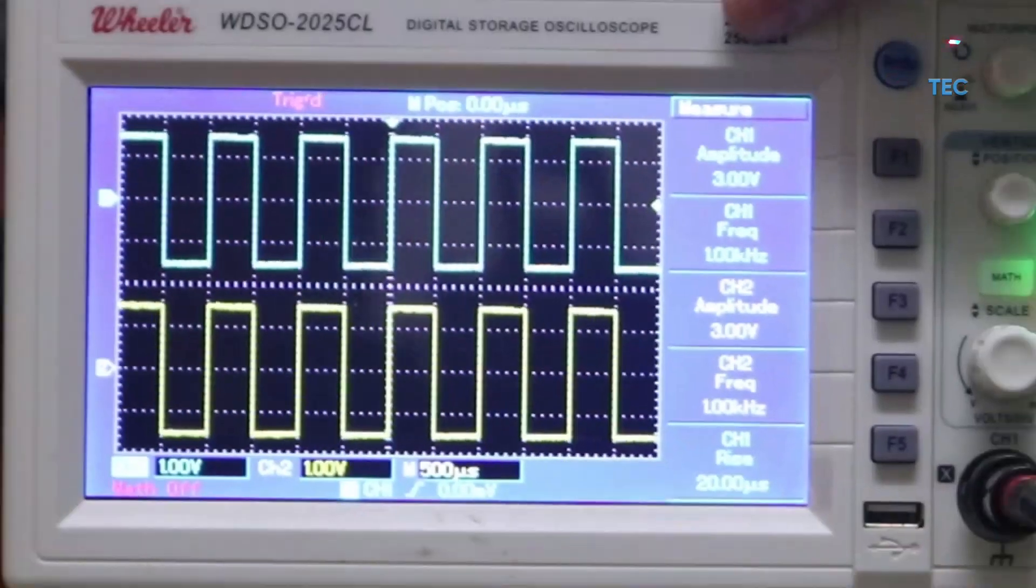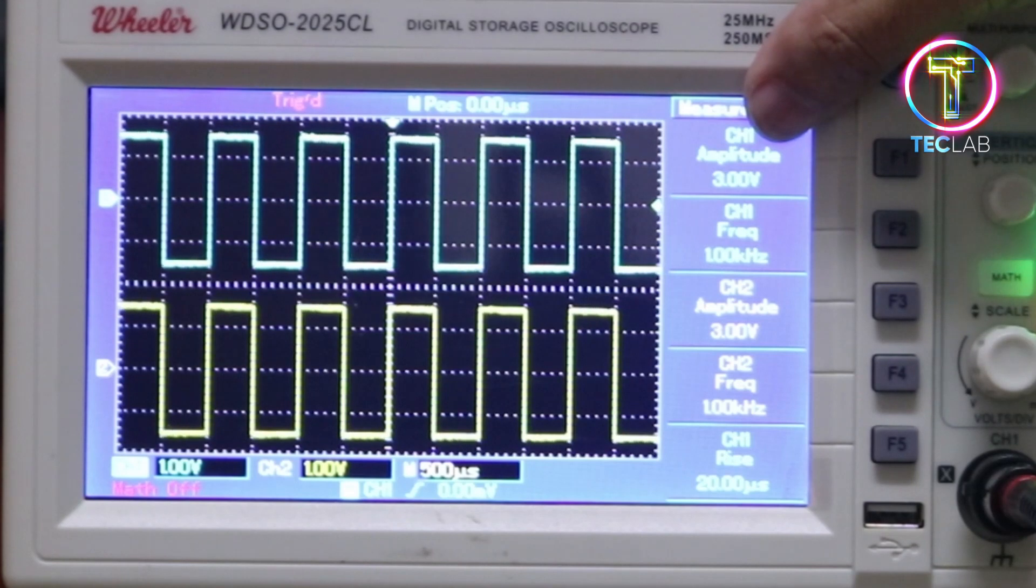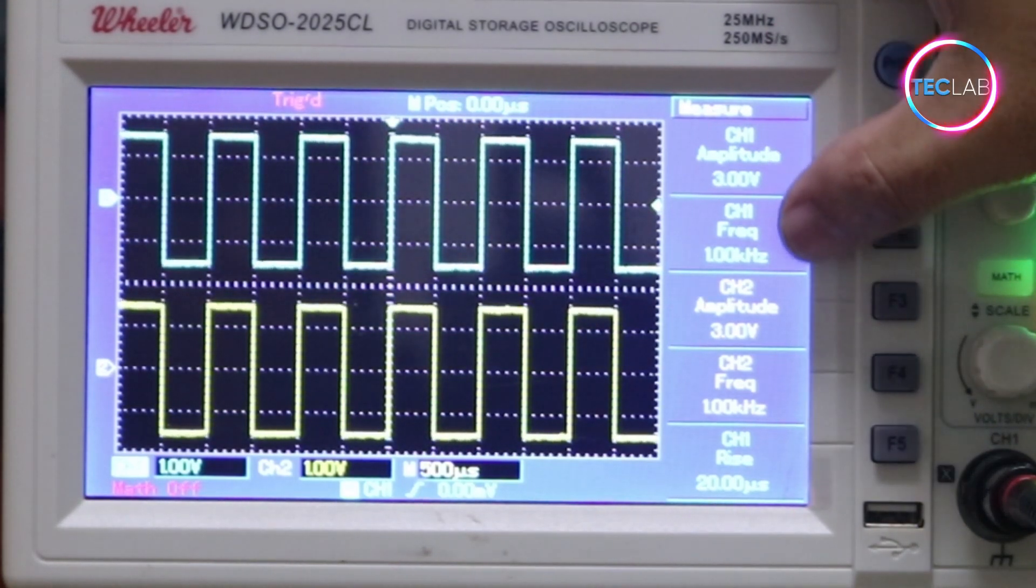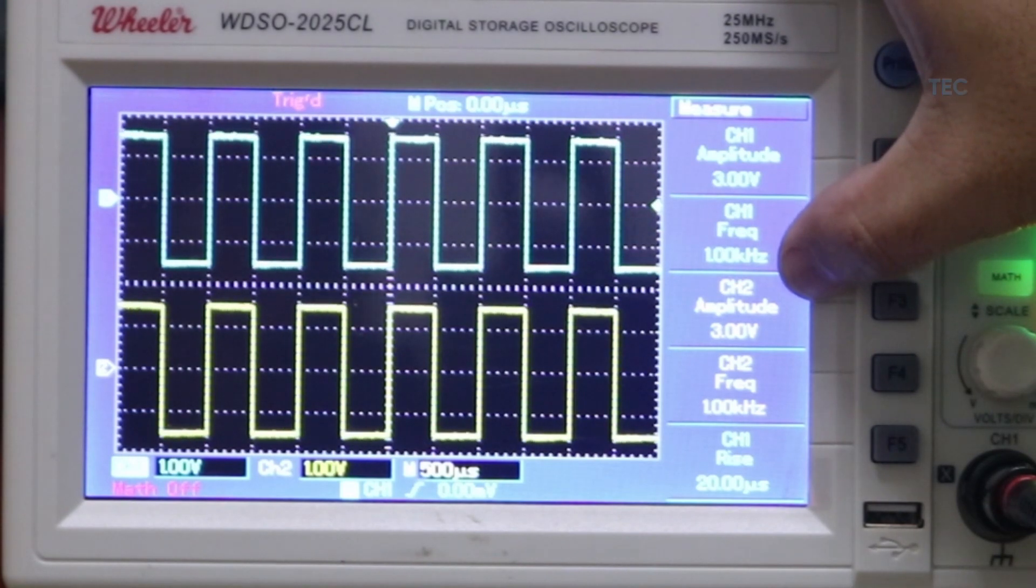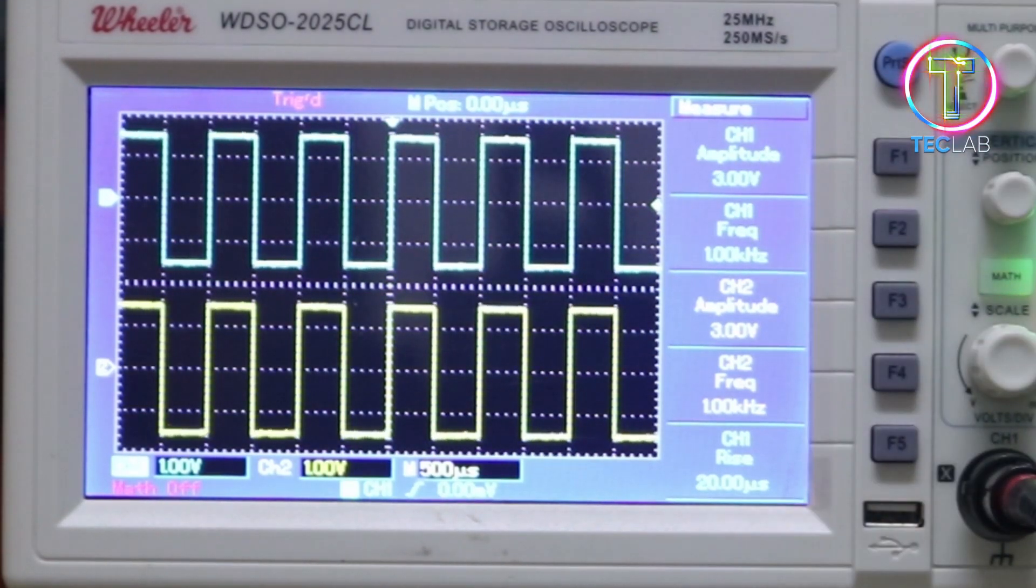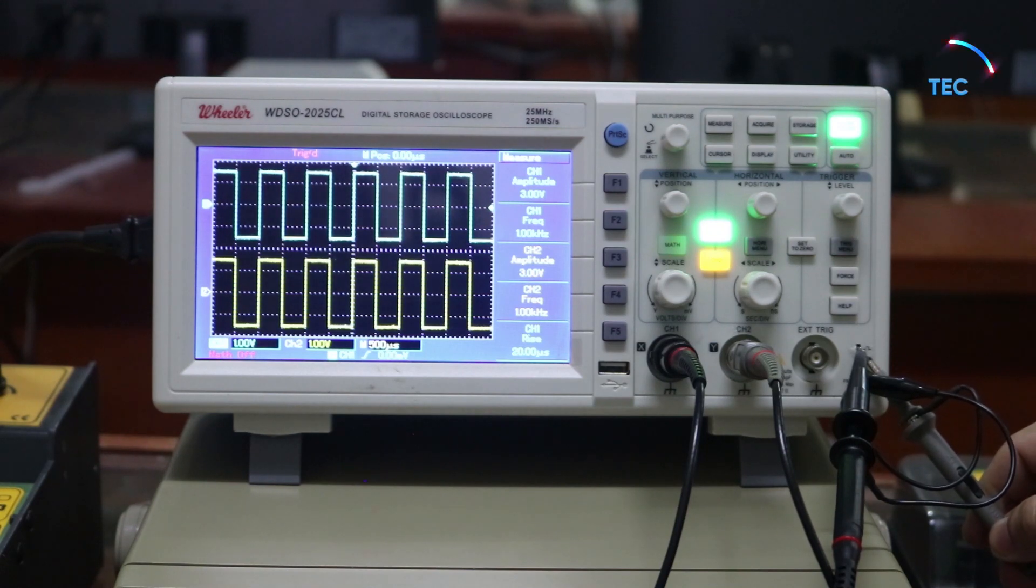As you can see here in the measurement, the amplitude of channel 1 is 3 volts as I've said, and the frequency is 1kHz. For channel 2, we have 3 volts amplitude and 1kHz frequency. If you have this kind of reading, we can say that your oscilloscope is already calibrated.